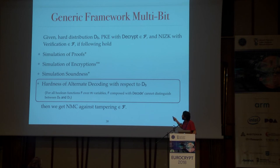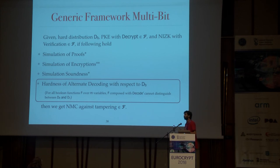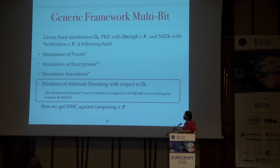This framework can also be used for encoding multiple bits with slight strengthening. The first three conditions remain exactly the same. We only need to strengthen the last condition: we want to ensure that the alternate decoding algorithm, when composed with any Boolean function f taking m inputs, still cannot distinguish between the hard distributions D0 and D1, where m is the number of input bits we want to encode.